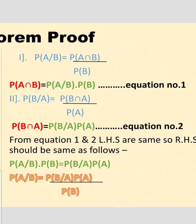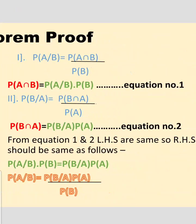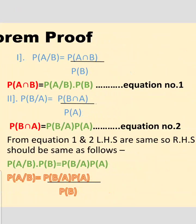For the second part of conditional probability, P(B|A) is equal to P(B ∩ A) divided by P(A). From this, P(B ∩ A) becomes P(B|A) multiplied by P(A). This is our equation number two.